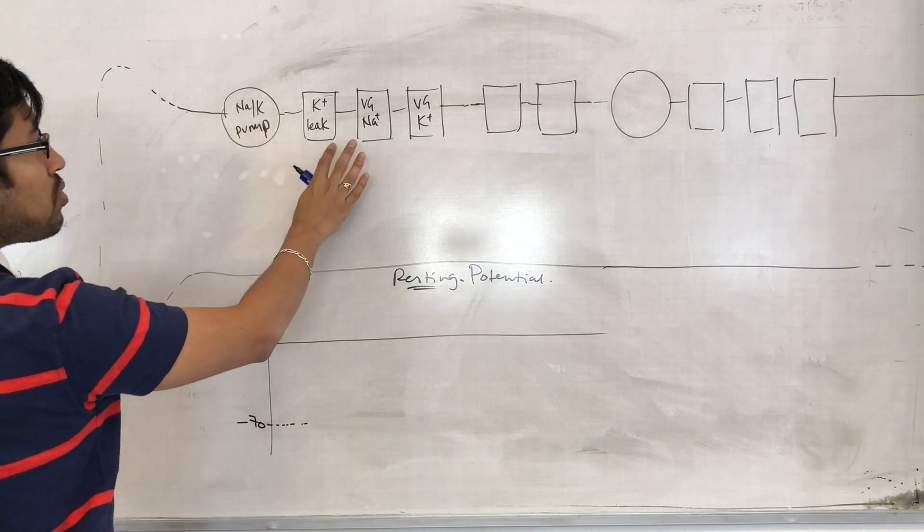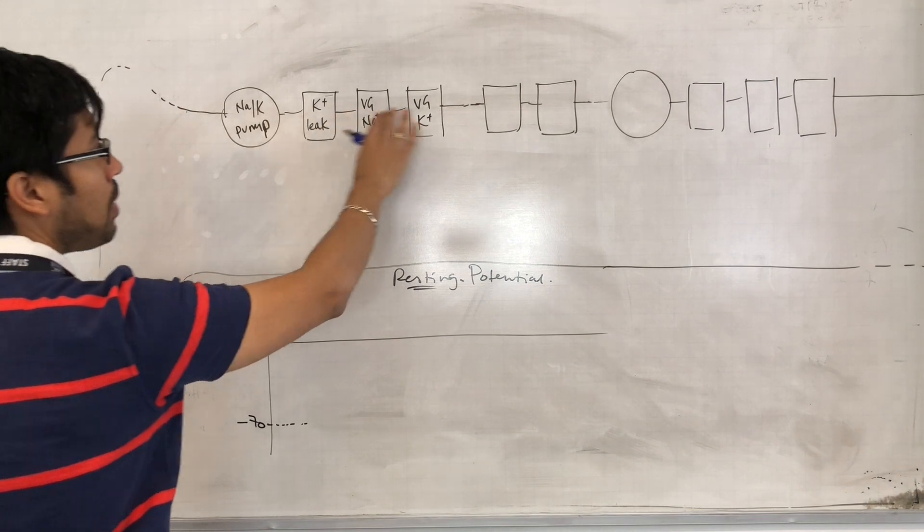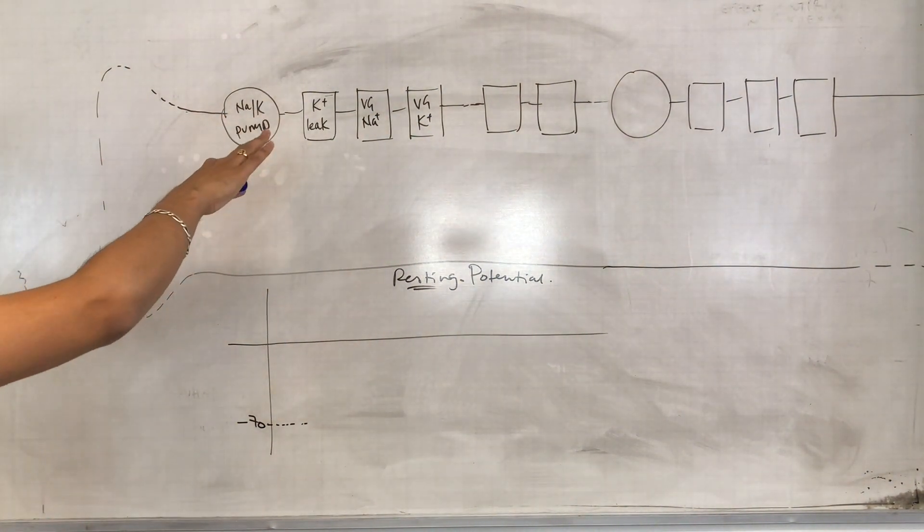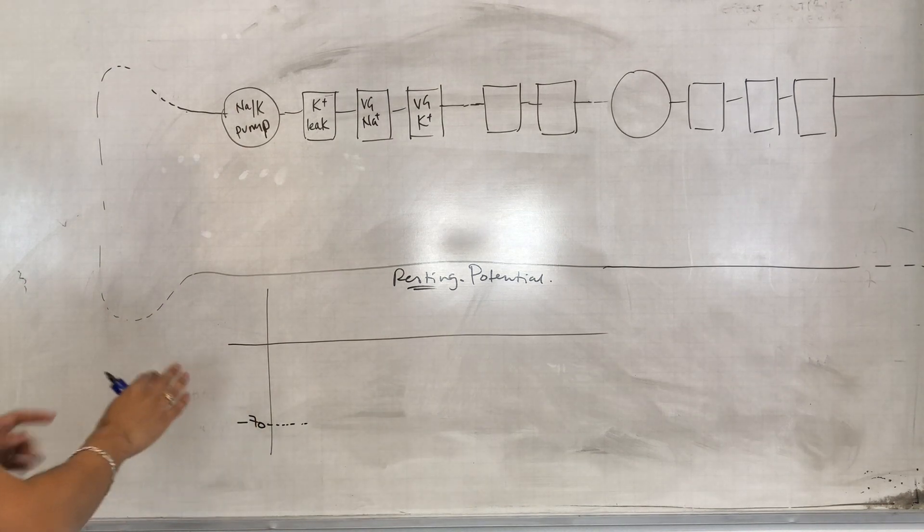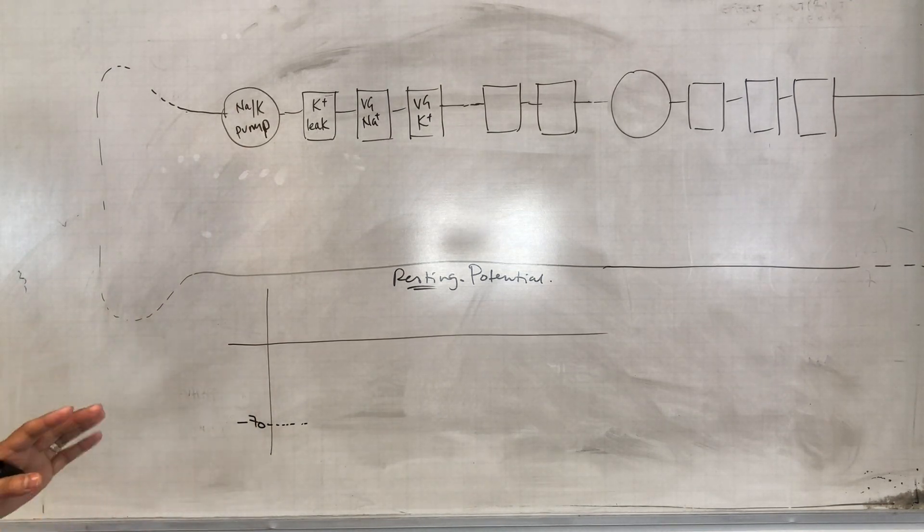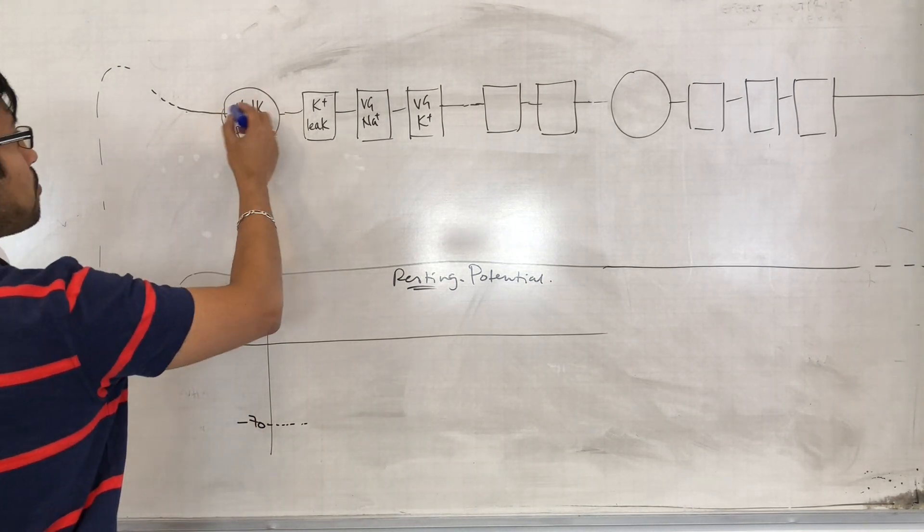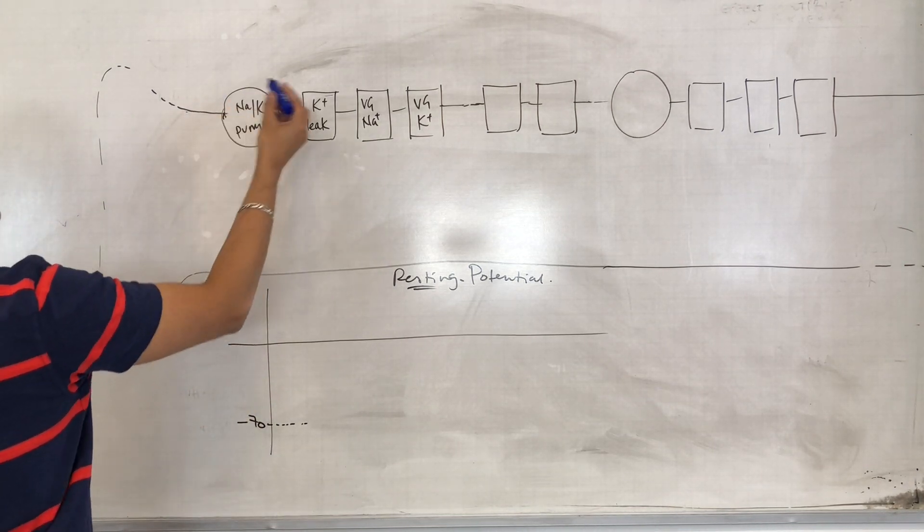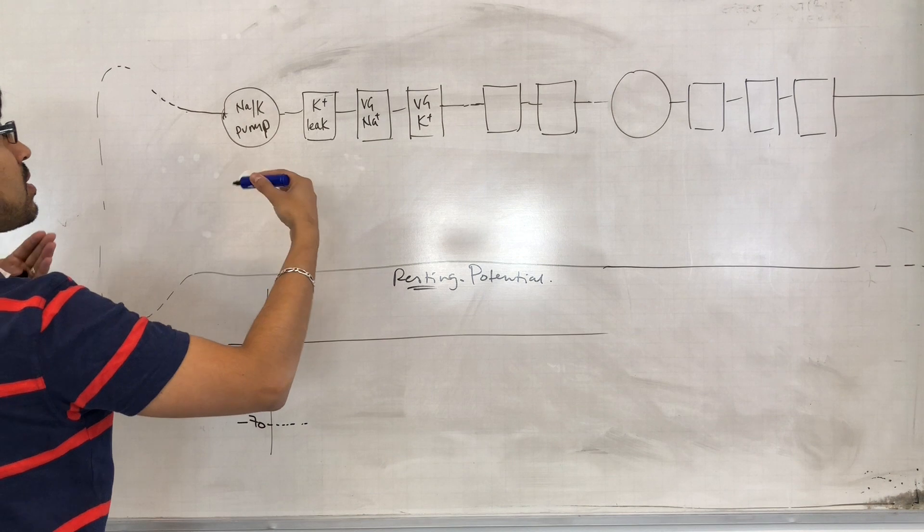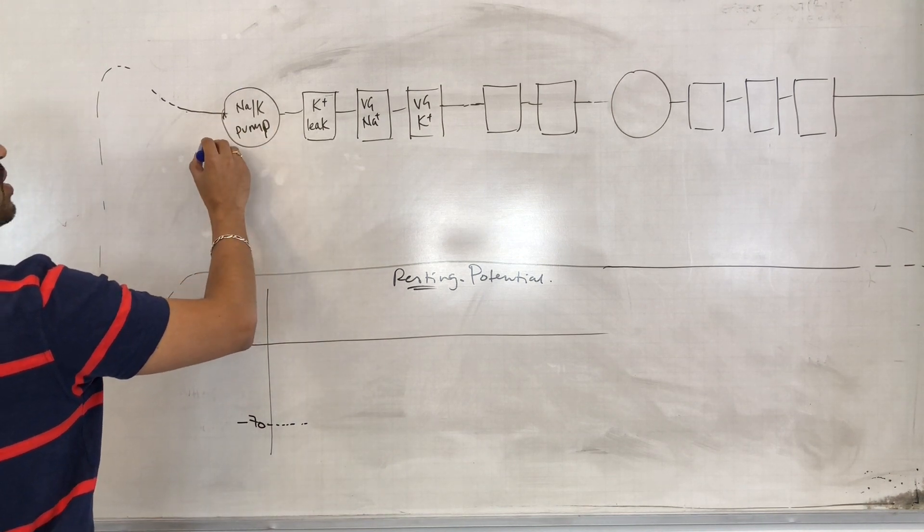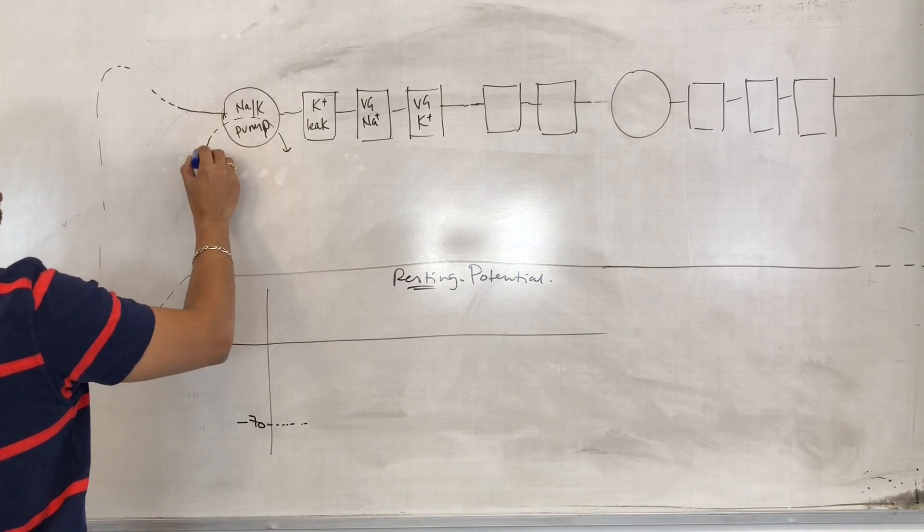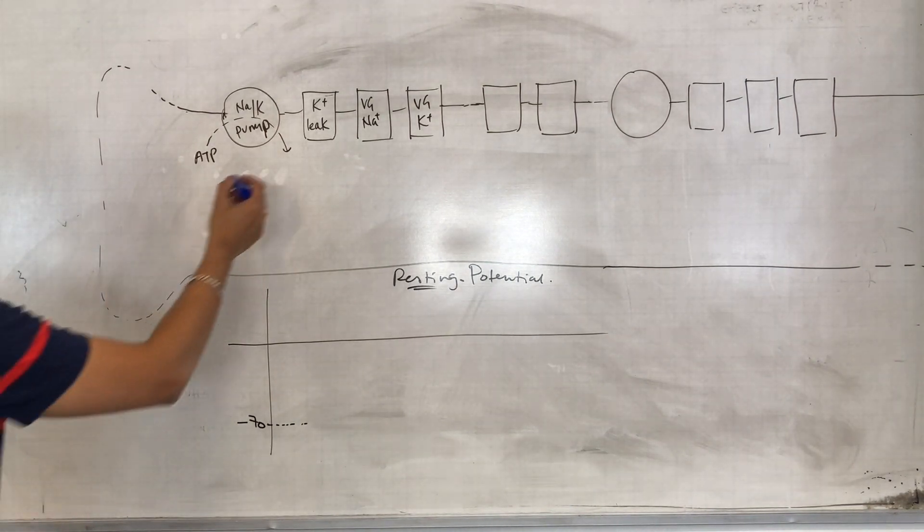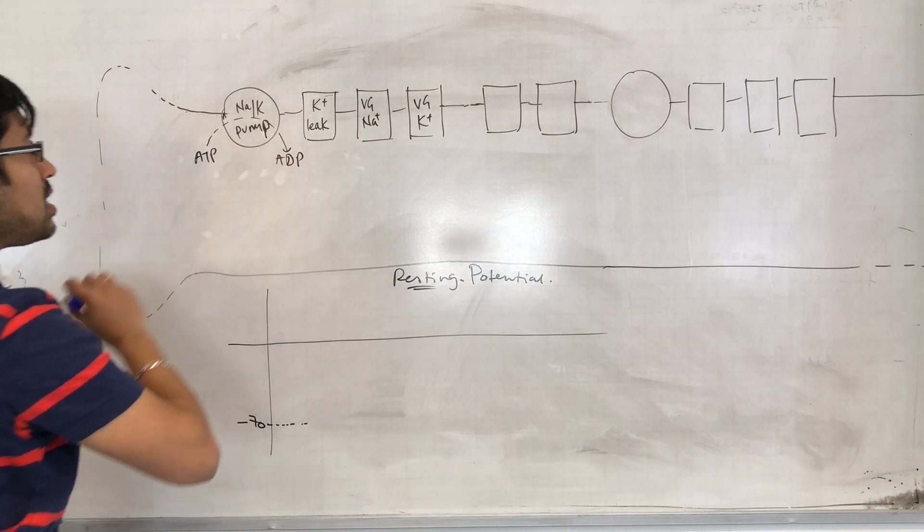There are certain proteins in the membrane of the axon, of the plasma membrane, that allow this ionic balance to be maintained. The first most important one is the sodium-potassium pump, which is constantly using the energy of ATP hydrolysis, converting that to ADP.